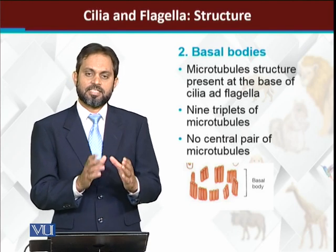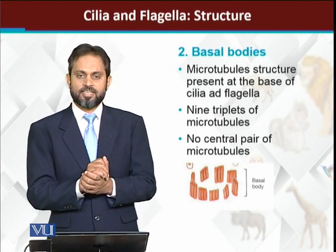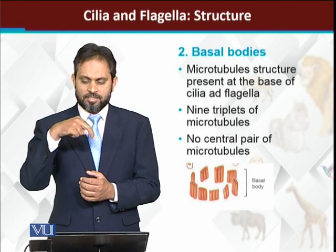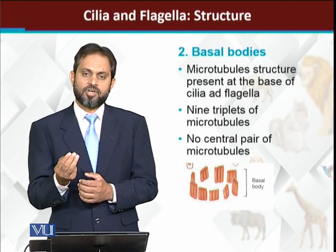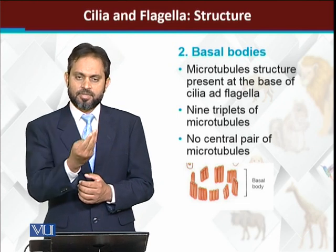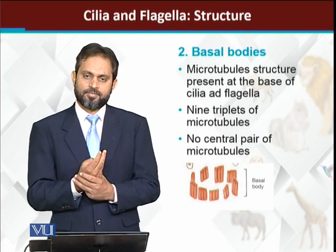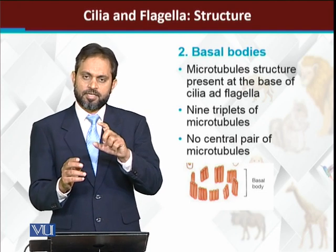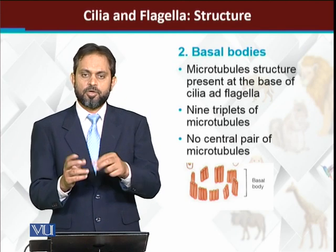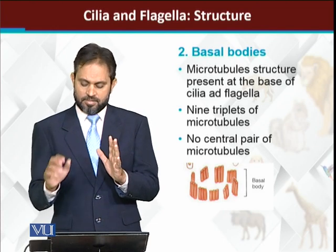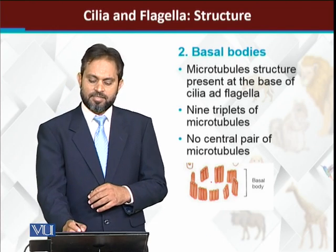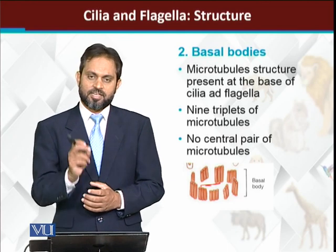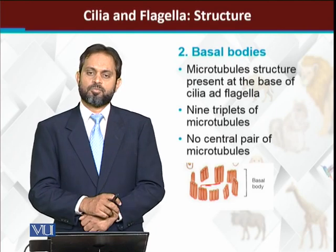The structure of the basal body is slightly different from cilia and flagella. The first difference is that while cilia and flagella have nine doublets - two microtubules each in a circle of nine - the basal body has nine triplets, meaning three microtubules per unit in a circle of nine. The second major difference is that cilia have a central pair of microtubules in their center, but the basal body has no central microtubules - it is completely empty in the middle. Wherever cilia originate, a basal body will exist at the base of that cilium.